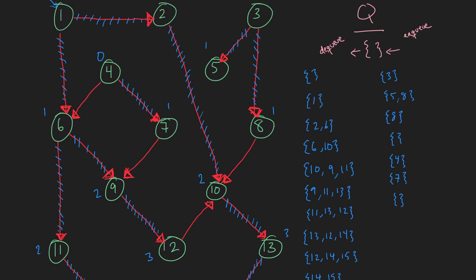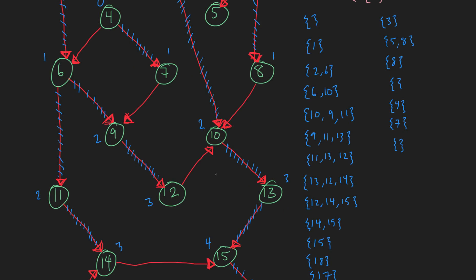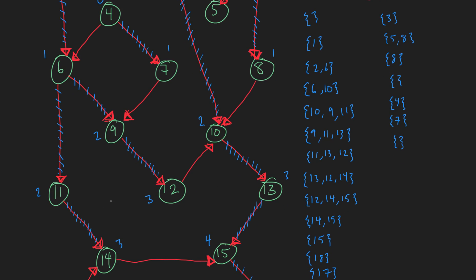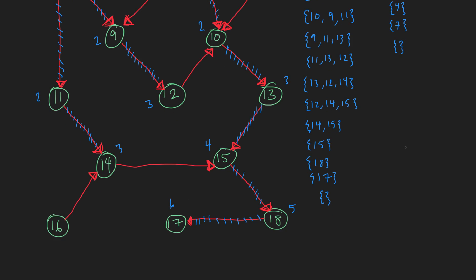Nodes 8 through 15 have all been discovered. Node 16 is next — we enqueue 16. When we dequeue 16, its adjacency list contains 14, which has already been discovered. So we do nothing. And with that, we have finished our breadth-first search.